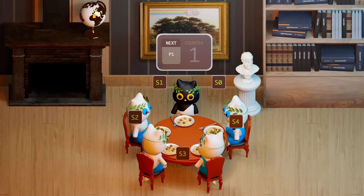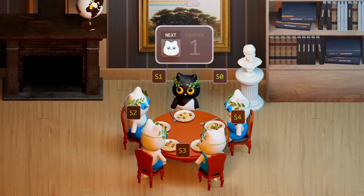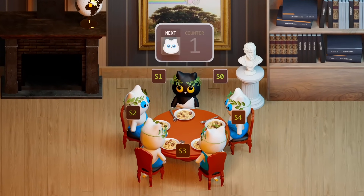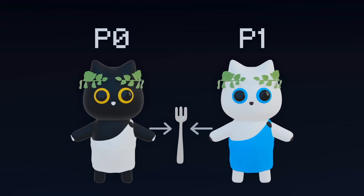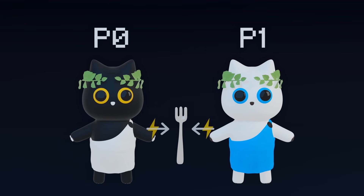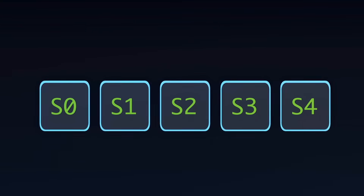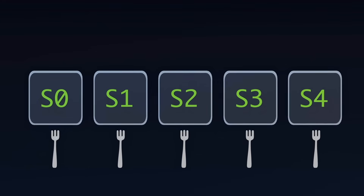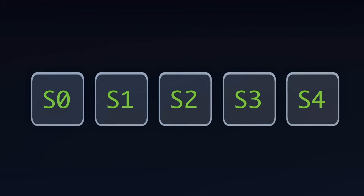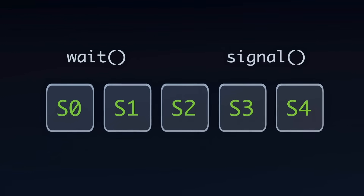The queue keeps track of the order in which the philosophers have requested the resource. We no longer allow the philosophers to interact directly with the forks. Instead, they are made to interact with the five semaphores representing the five forks. They can perform two operations on the semaphores: wait and signal.